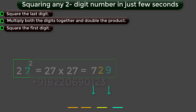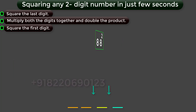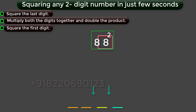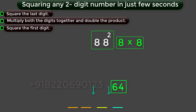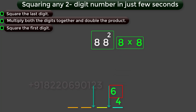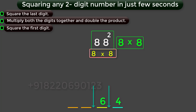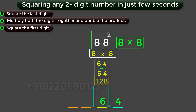Let us take one final example: 88 squared. Find the square for the last digit 8, you will get 64. In this 64, the 4 becomes the last part of the answer, and the 6 moves to the middle part of the answer. Next, multiply both digits 8 and 8 together, you will get 64. Then, double the 64, you will get 128.